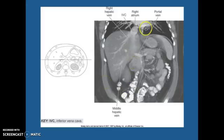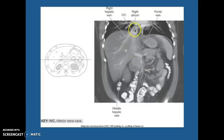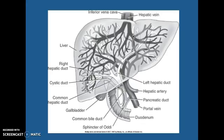If we're looking here, you can see your portal vein right there with your right hepatic vein going into your inferior vena cava. So your hepatic vein and your inferior vena cava — this is the system within your liver.